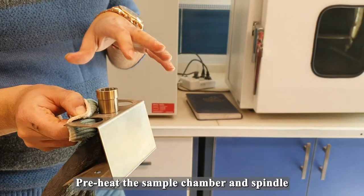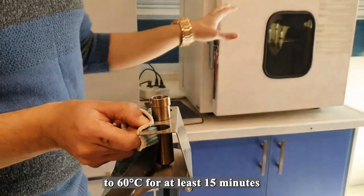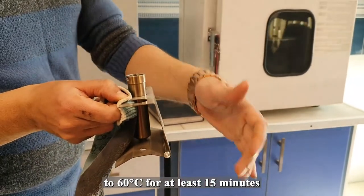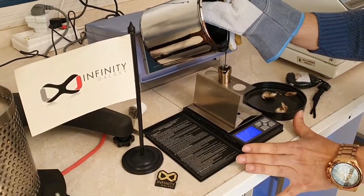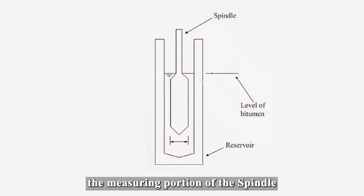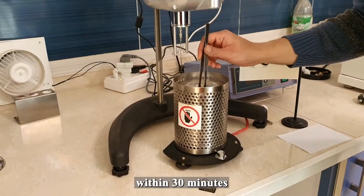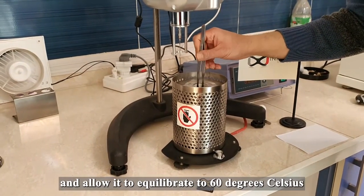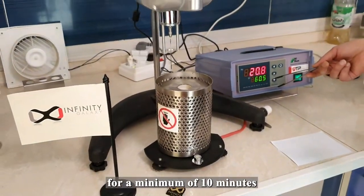Preheat the sample chamber and spindle to 60 degrees Celsius for at least 15 minutes. Add the required volume of bitumen into the sample chamber. Note that the measuring portion of the spindle will be completely immersed in the bitumen. Bring the bitumen sample to the test temperature within 30 minutes and allow it to equilibrate to 60 degrees Celsius for a minimum of 10 minutes.